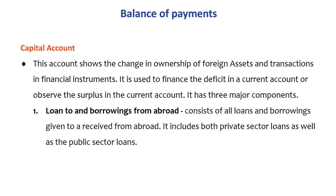The capital account has three major components. The first is loans to and borrowings from abroad — it consists of all loans and borrowings given to or received from abroad, including both private sector loans and public sector loans.